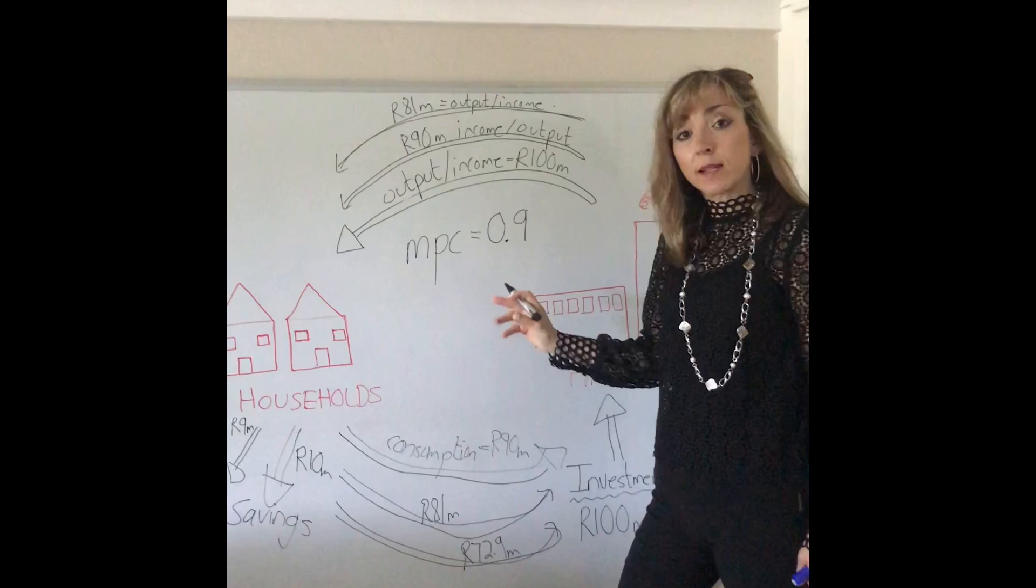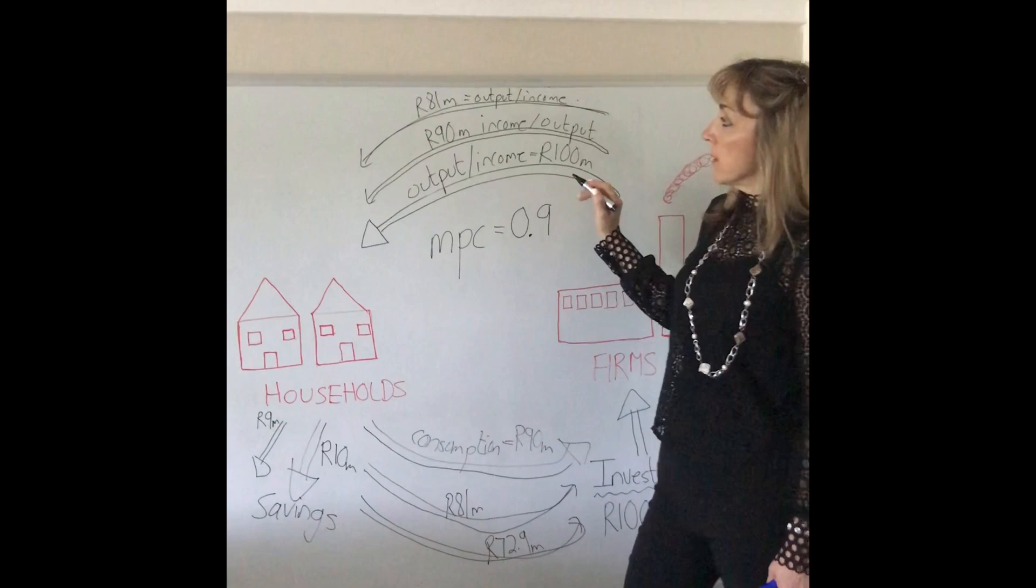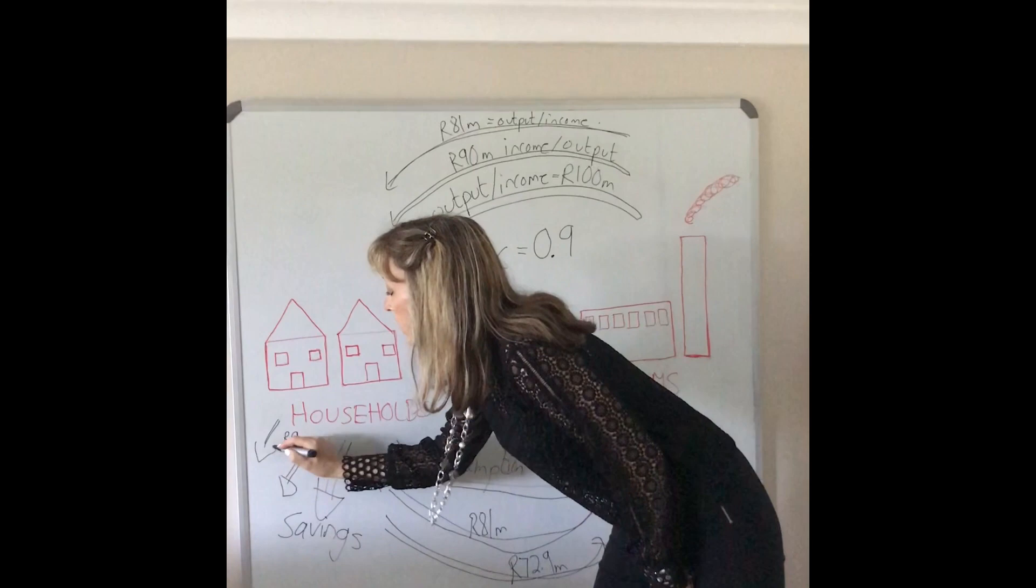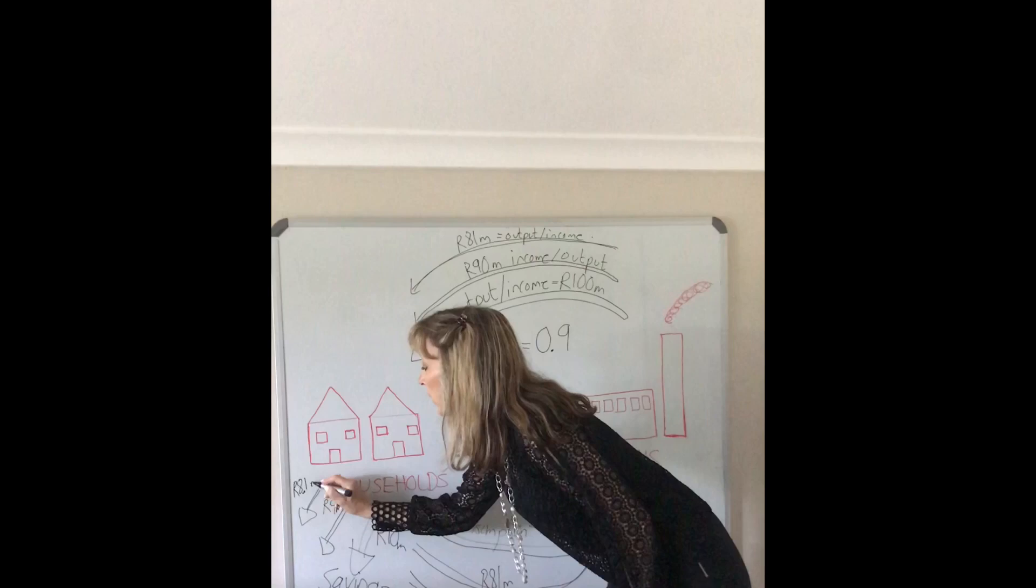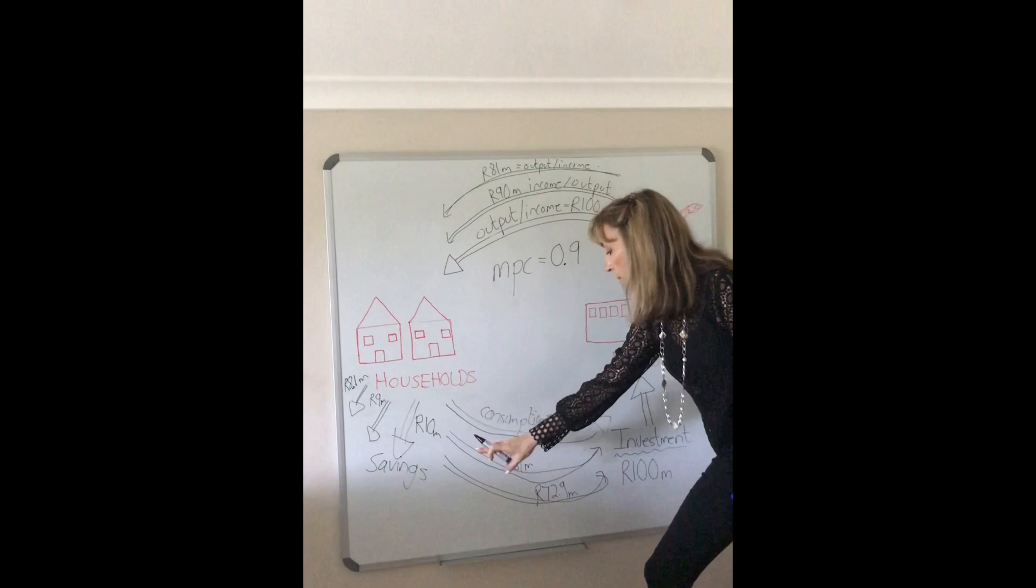So once again 0.9 of that will be spent on consumption and 0.1 of that will be saved. So 0.1 of that is going to translate into 8.1 million. And the rest which is going to be 72.9 million is going to flow back to firms in the form of consumption expenditure.